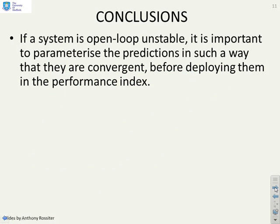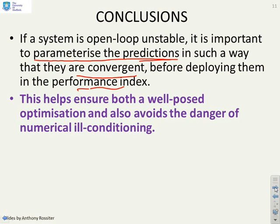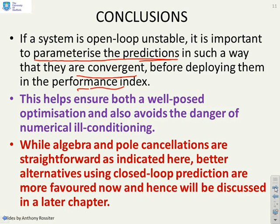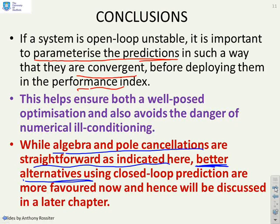In conclusion: if a system is open-loop unstable, it's important to parameterize the predictions so they are convergent before putting them into the performance index. This ensures a well-posed optimisation and avoids numerical ill-conditioning. Although the algebra and pole cancellations are straightforward, better alternatives using closed-loop prediction are now more favoured in the literature, which is why this video has been kept brief. Closed-loop prediction routes are recommended and will be discussed in a later chapter.